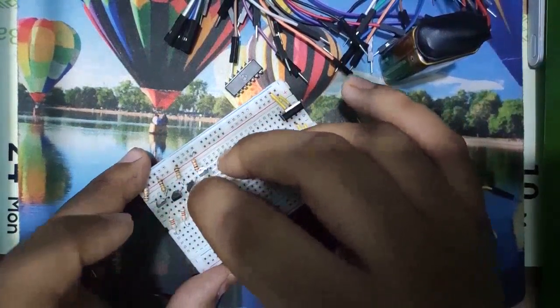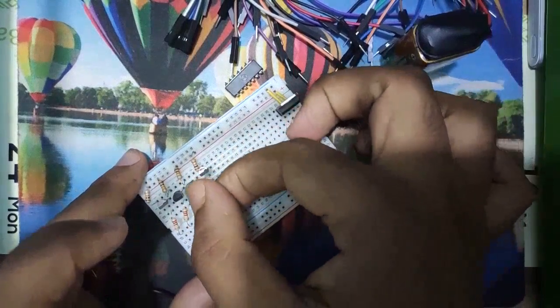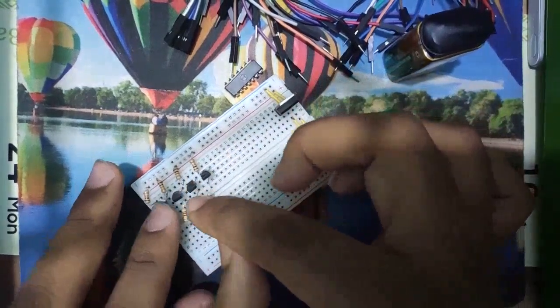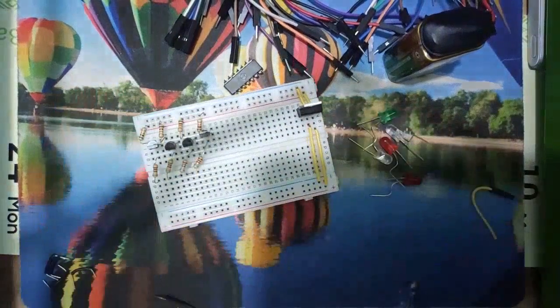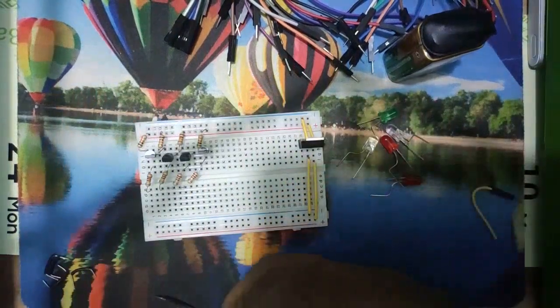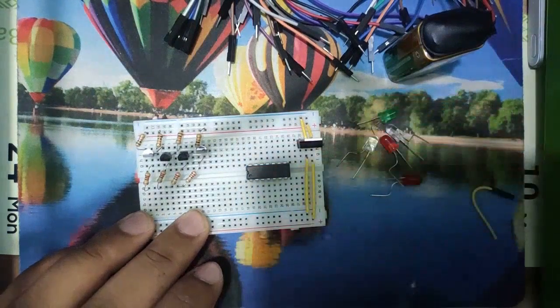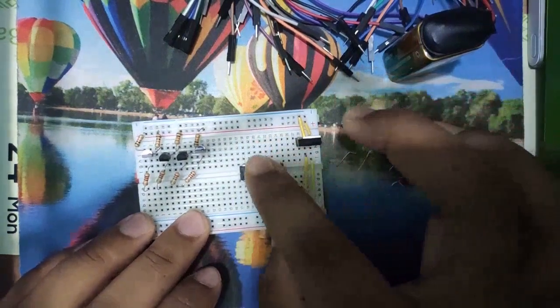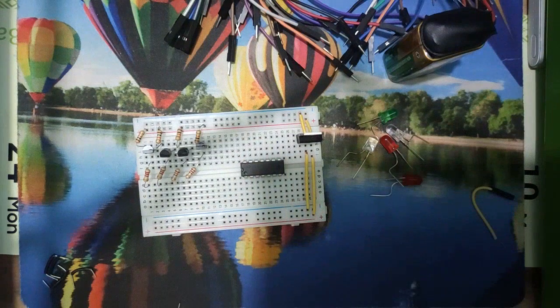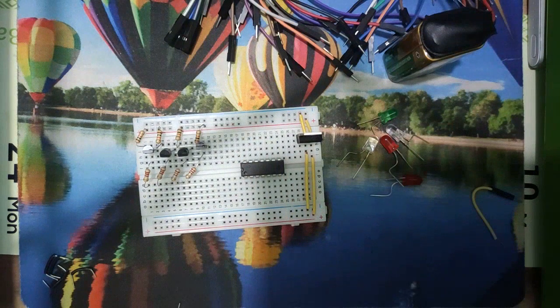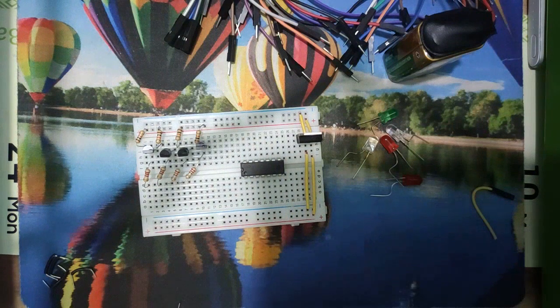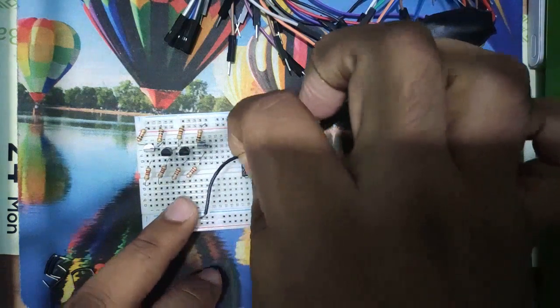Now place the IC on the breadboard and connect the pin 14 with 5 volt and pin 7 as ground. Now let's connect the NAND gate with the collector.